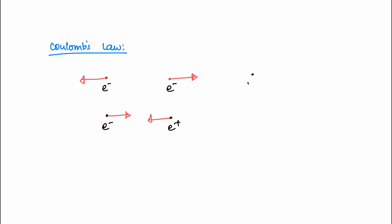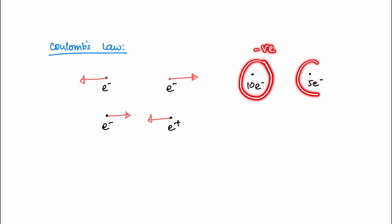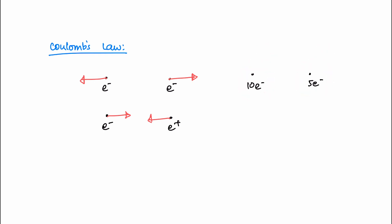Now, let's take 10 electrons. It will take 5 electrons. This is a total charge. What are the two charges? Since they are both negative charges, there is a repulsion force. That is the same charge, so that is the force of repulsion.